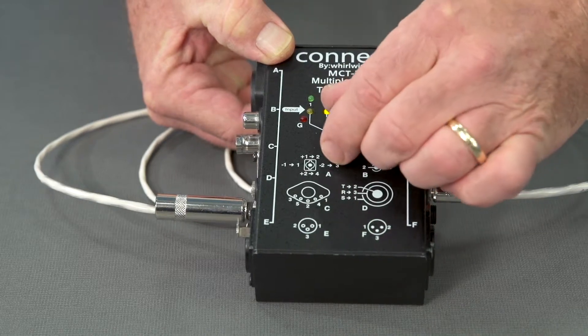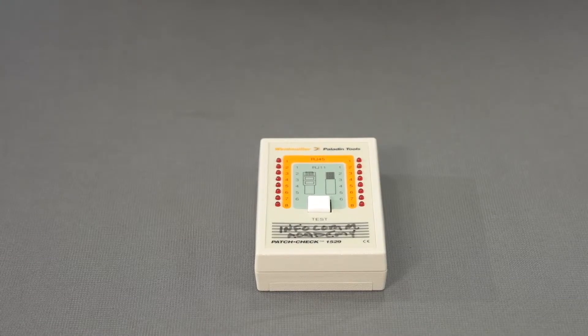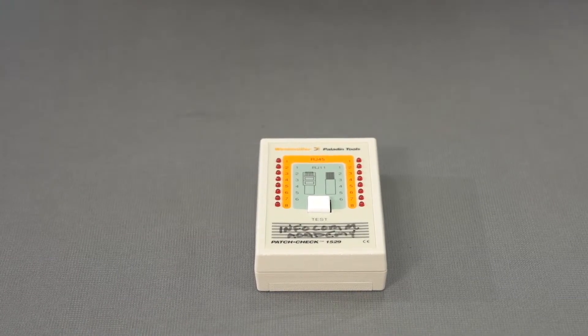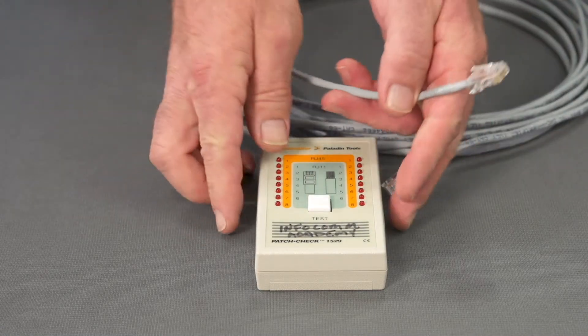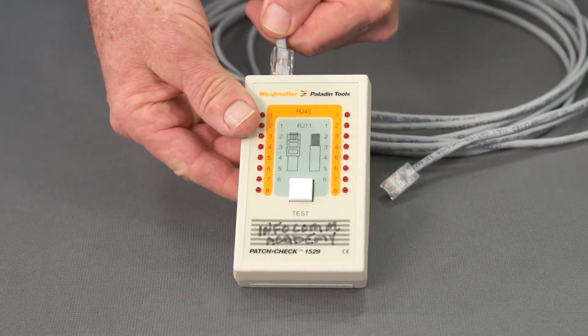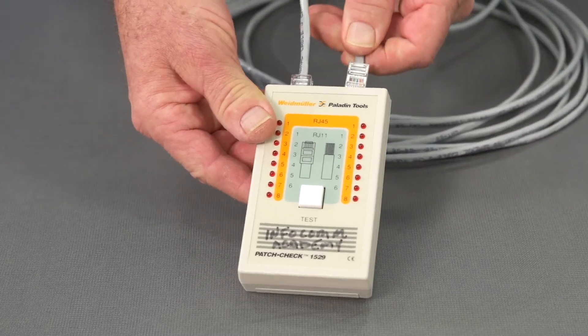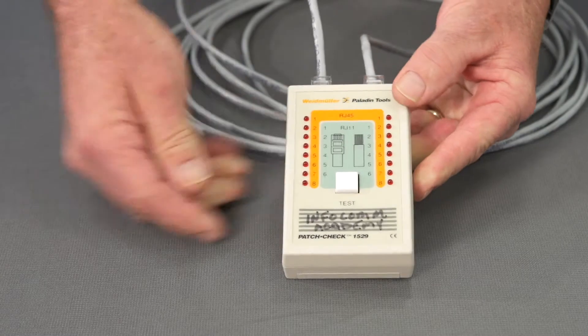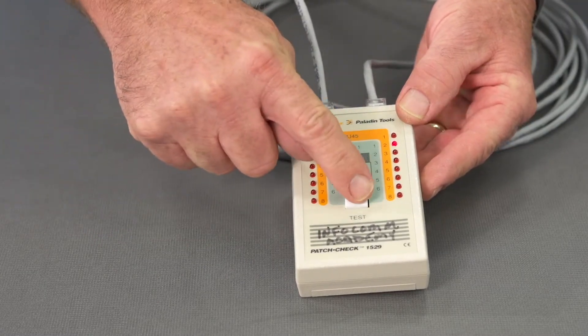We've looked at ways to test audio and video cable, but now we're going to look at ways to test data cable. What you're looking at here is an RJ45 cable tester. We'll demonstrate it now. Again, these come in many different forms and styles and are available from different manufacturers. You simply insert the cables in either end and then push the test button: pair one, two, three, four, and so on. This will tell you if your connections are the same on both ends.